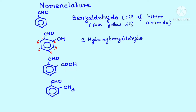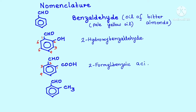We have CHO and COOH — be very careful which of these is going to get the first preference. Of course, our COOH gets the first preference, so it's one, two, three, and so on. Now, how do you name a CHO group as a prefix? At the second position I have formyl — that means the CHO group would be named as formyl — so we'll have 2-formyl, and my parent compound will be C6H5COOH. According to the IUPAC system, its name benzoic acid is readily accepted, so we have 2-formylbenzoic acid.